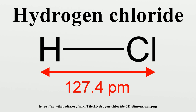Naturally abundant chlorine consists of two isotopes, 35Cl and 37Cl, in a ratio of approximately 3 to 1. While the spring constants are very similar, the reduced masses are different, causing significant differences in the rotational energy. Thus doublets are observed on close inspection of each absorption line, weighted in the same ratio of 3 to 1.